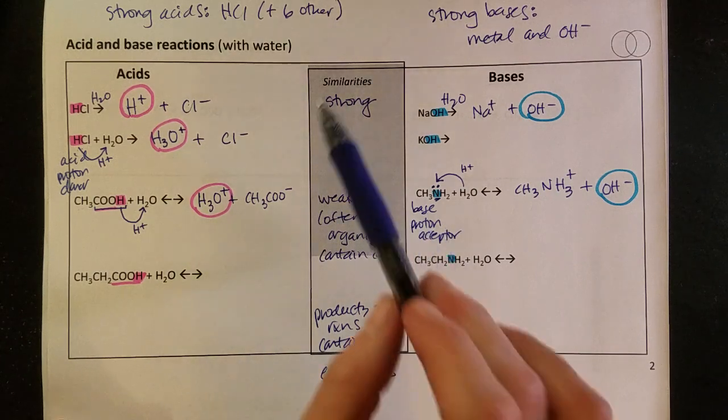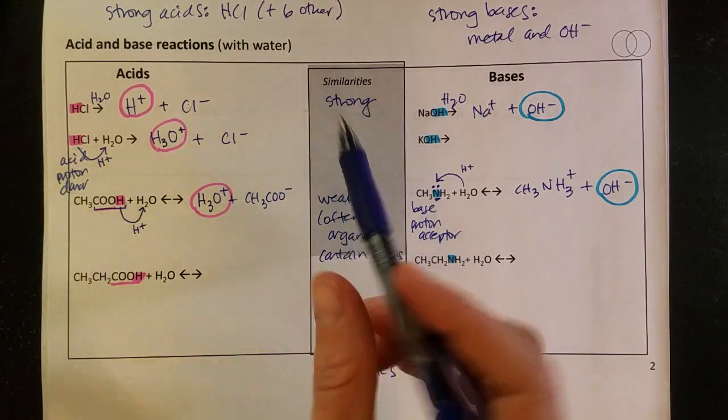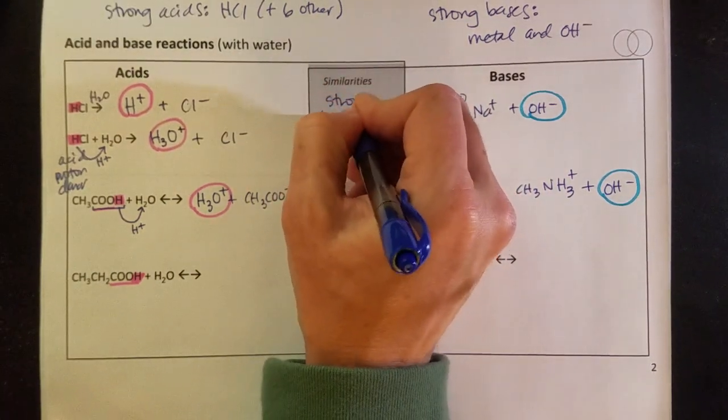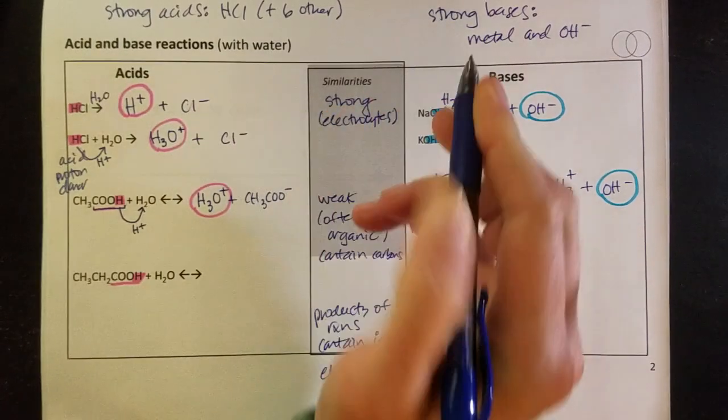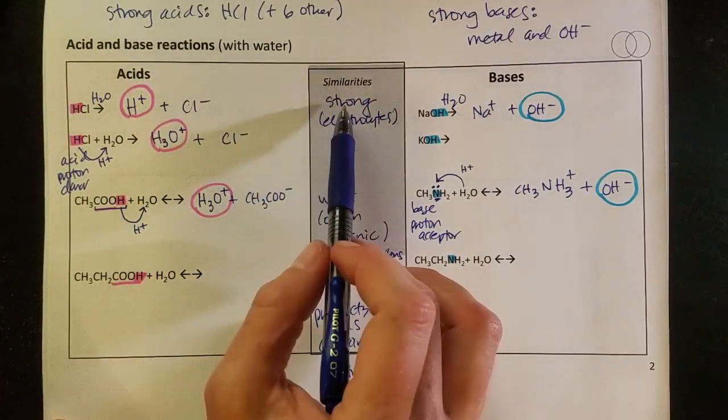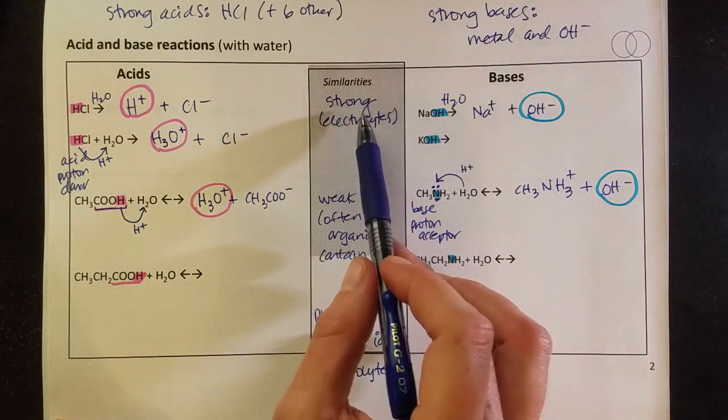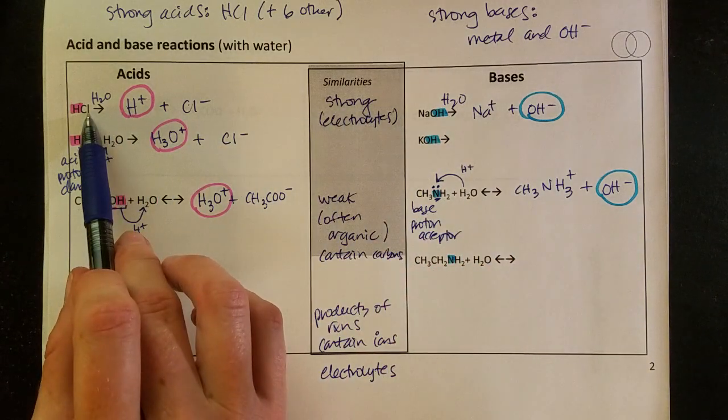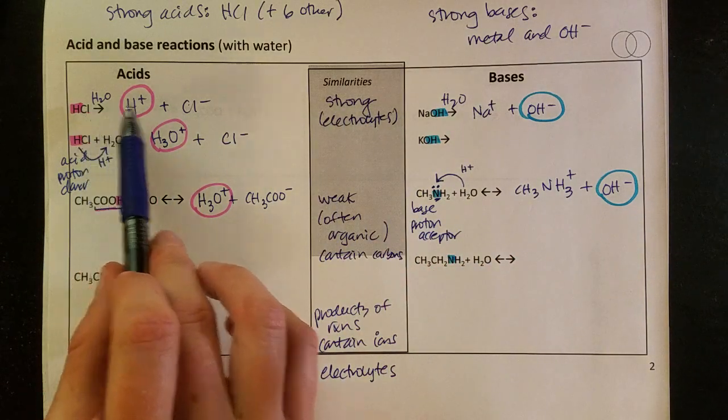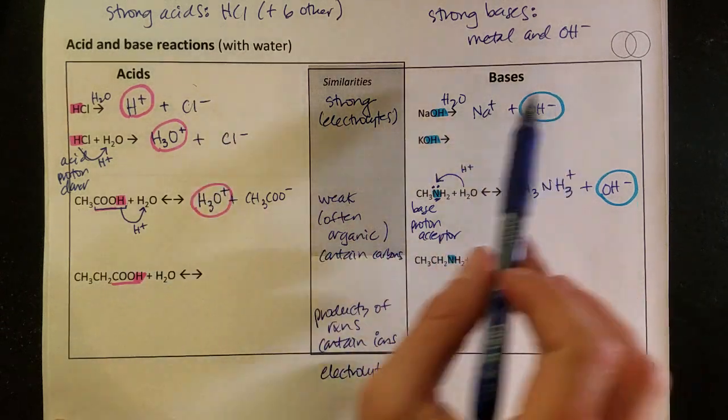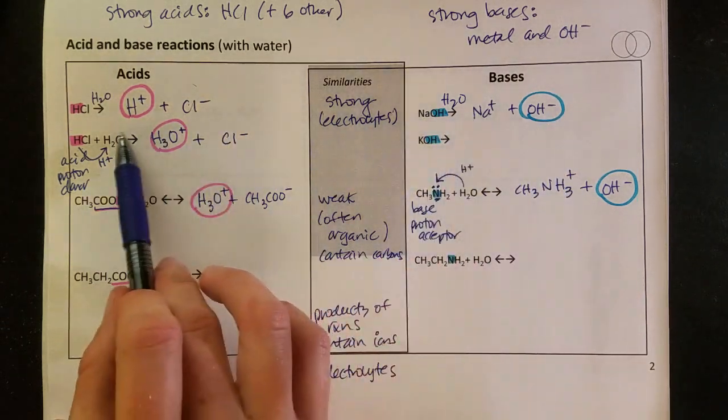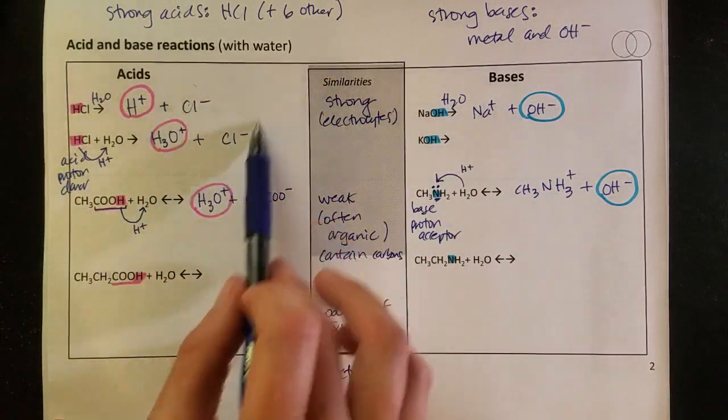And so that tells me that these are all electrolytes. I could say these are strong electrolytes. So strong acids are strong electrolytes, and strong bases are strong electrolytes. They ionize completely to form all ions, and you can see that with these arrows going forward that we're making only products, lots of ions.